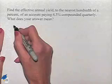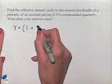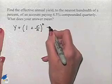The formula for the effective annual yield is Y equals 1 plus R over N to the nth power minus 1.